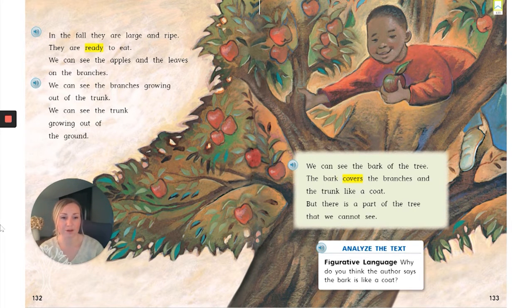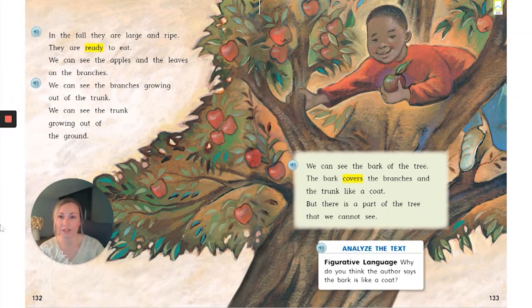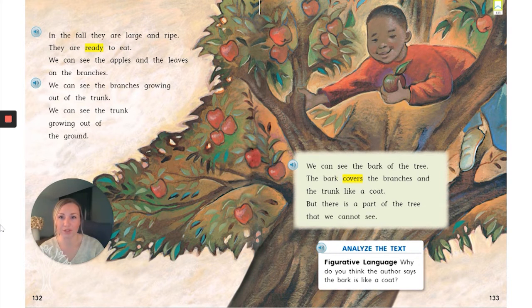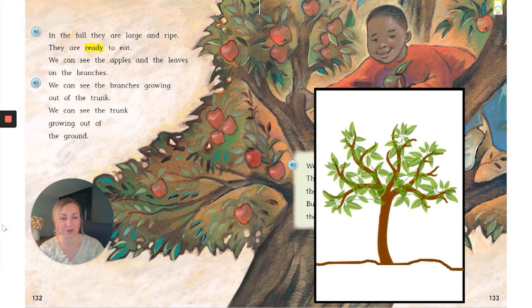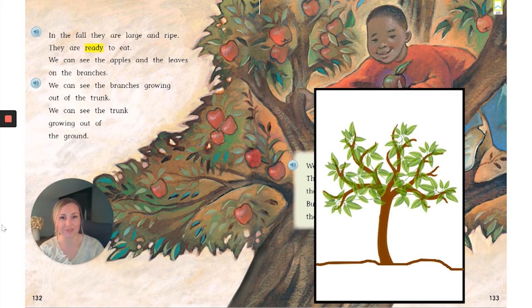So before we start talking about the part we can't see, let's talk about what we learned on this page. So we have our tree. And in this page, what grows on those branches? Right. Leaves start to grow on those branches. And then from that and from the blossoms, what grows? Apples. That's what makes it an apple tree.